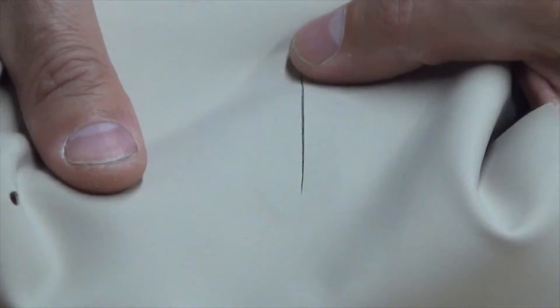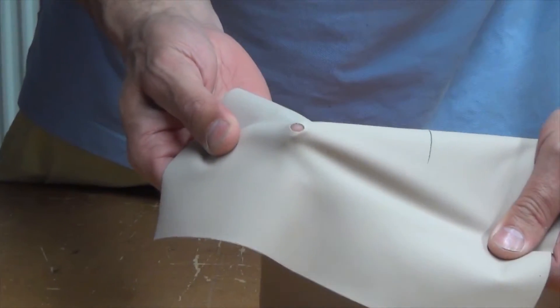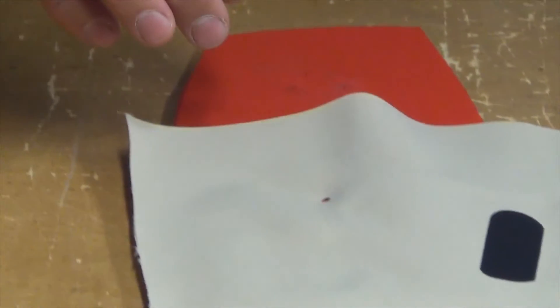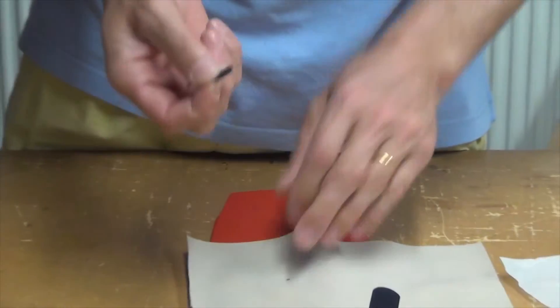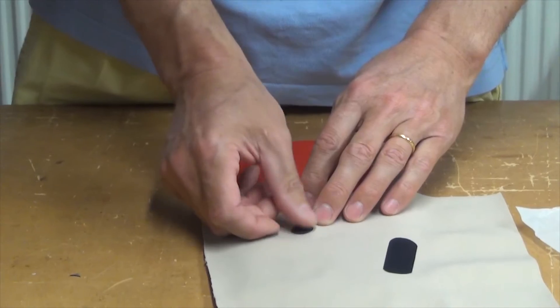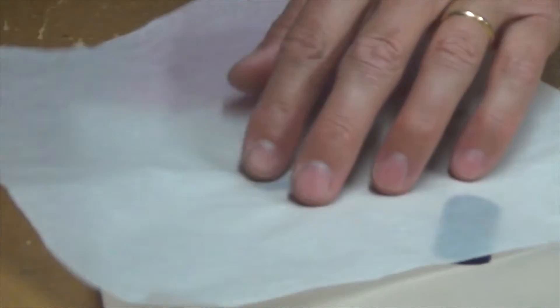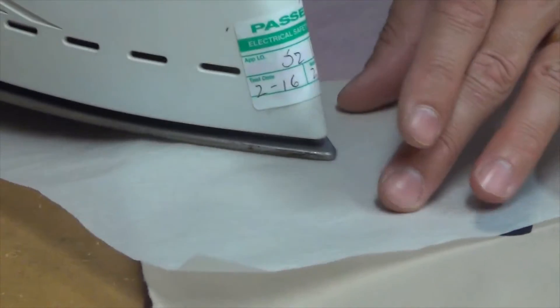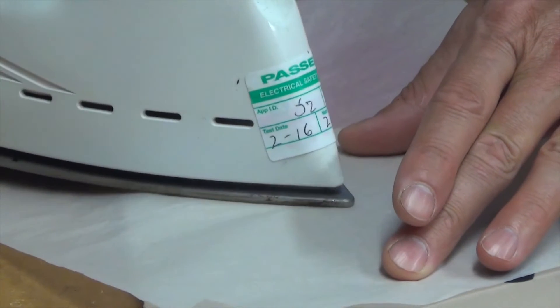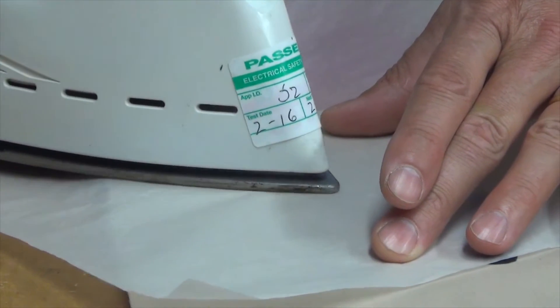And you can see there we've got a fairly good repair over the slit. Maybe a little bit more work to do on the other side but I'll show you that later. Exactly the same thing applies for the dots here. We've got a small hole but this time we've cut out just a small dot, place it over the top, greaseproof paper and then we use the tip of the iron just to gently melt the adhesive and create a repair.